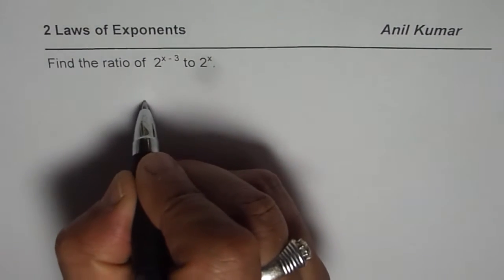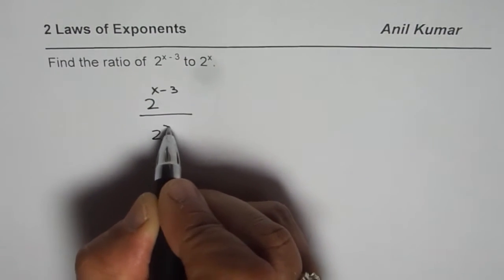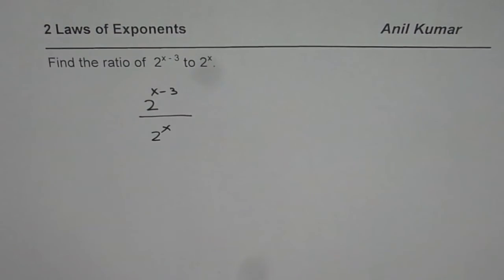So ratio of these two numbers really means what is 2 to the power of x minus 3 divided by 2 to the power of x. This is what you need to find. So you can pause the video and answer the question.